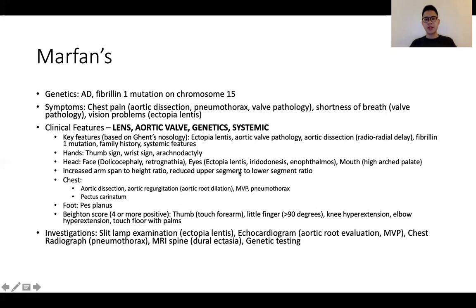Investigations are targeted at organ involvement: a slit-lamp examination to establish ectopia lentis, echocardiogram for aortic valve evaluation, and in an appropriate clinical context, a chest radiograph to diagnose pneumothorax and other imaging based on clinical manifestations. Genetic testing can also be considered to establish the fibrillin-1 gene mutation.